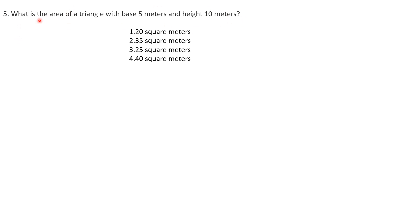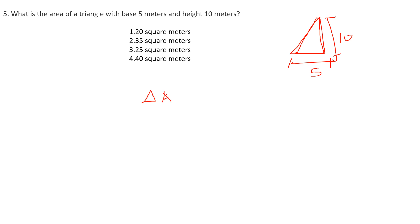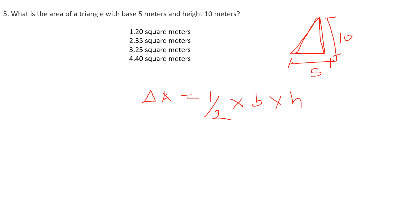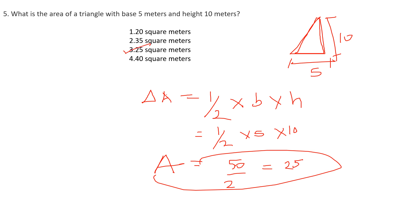Question five: what is the area of a triangle with base 5 meters and height 10 meters? The formula for area of a triangle is half × base × height. So area = ½ × 5 × 10 = 50/2 = 25 square meters. This matches option number 3.